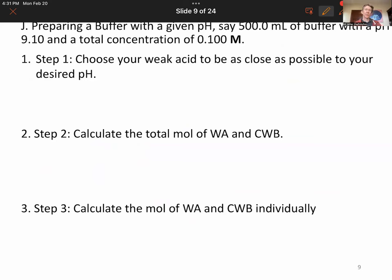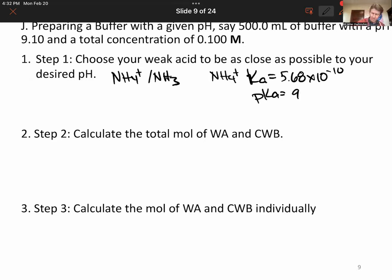Now, let's talk about preparing a buffer with a given pH. In particular, this one's going to be 500 milliliters of a buffer with a pH of 9.10 and a total concentration of 0.100 molarity. So you're going to choose your weak acid to be as close as possible to your desired pH. And we're going to choose ammonium, ammonia, as our weak acid and conjugate weak base. If you look that up, you'll see that ammonium has a Ka of 5.68 times 10 to the minus 10, which gives it a pKa equal to 9.25, which is pretty close to 9.10, though not exactly the same.